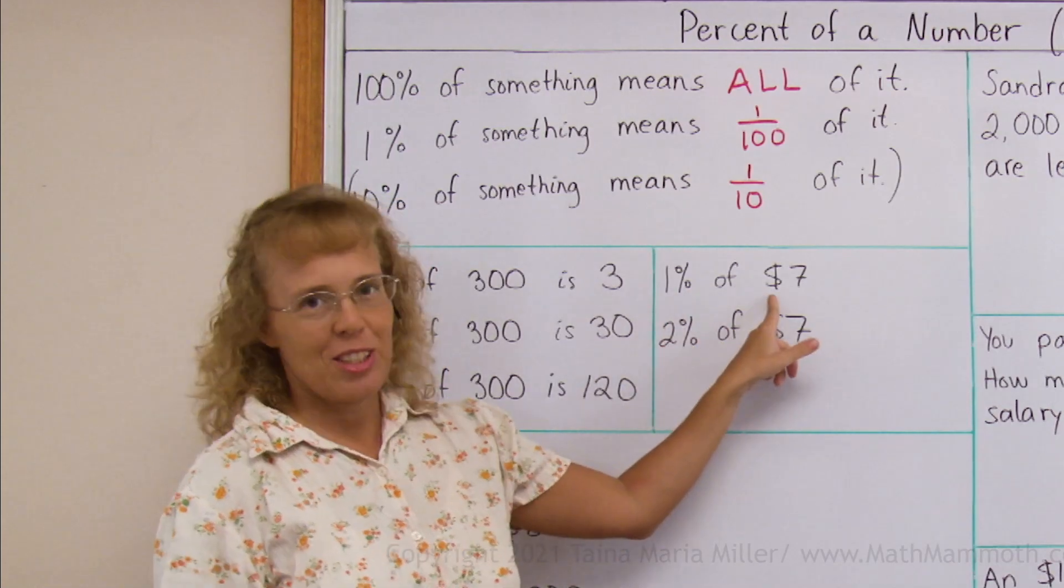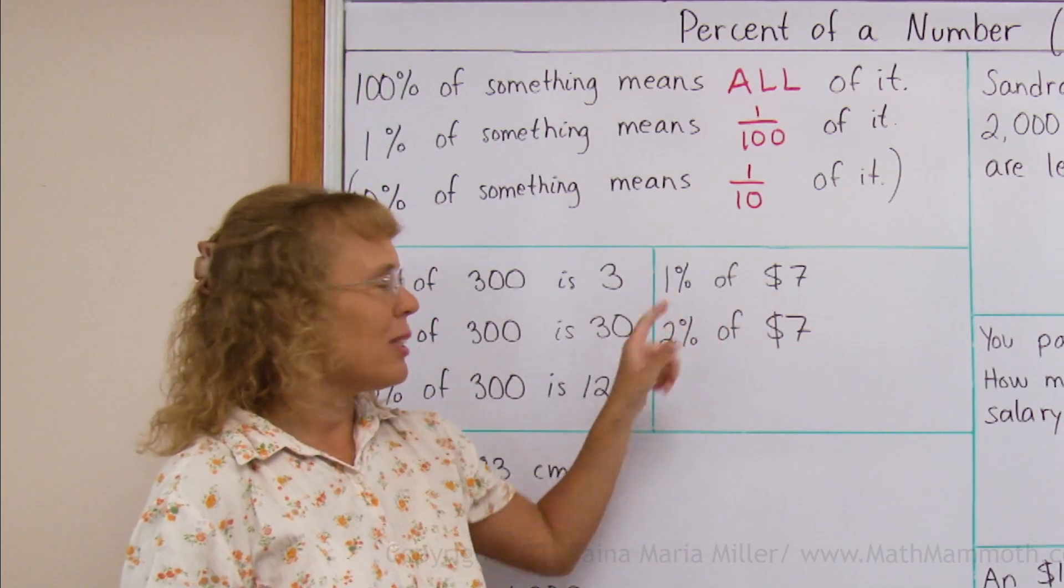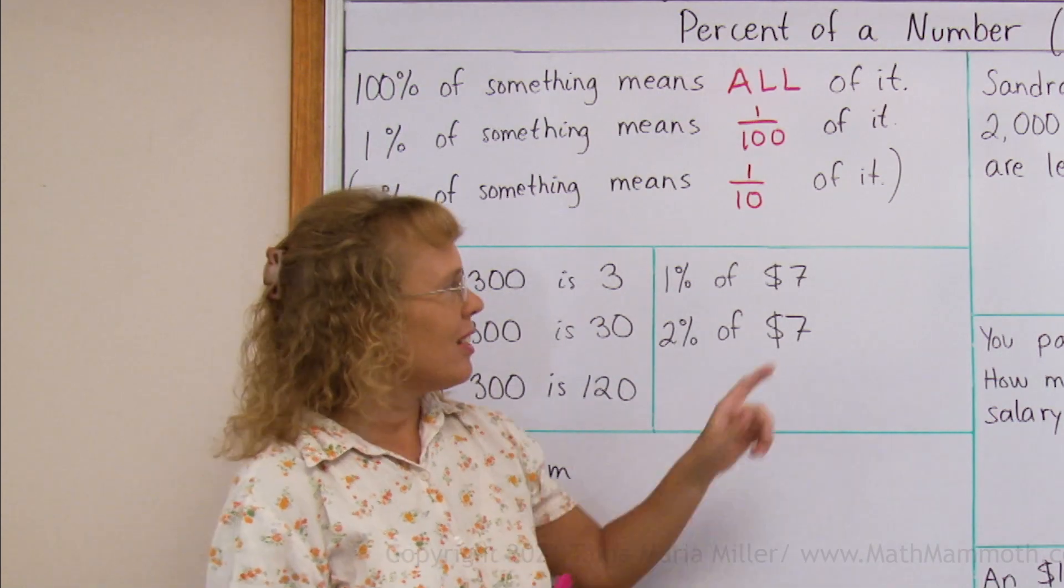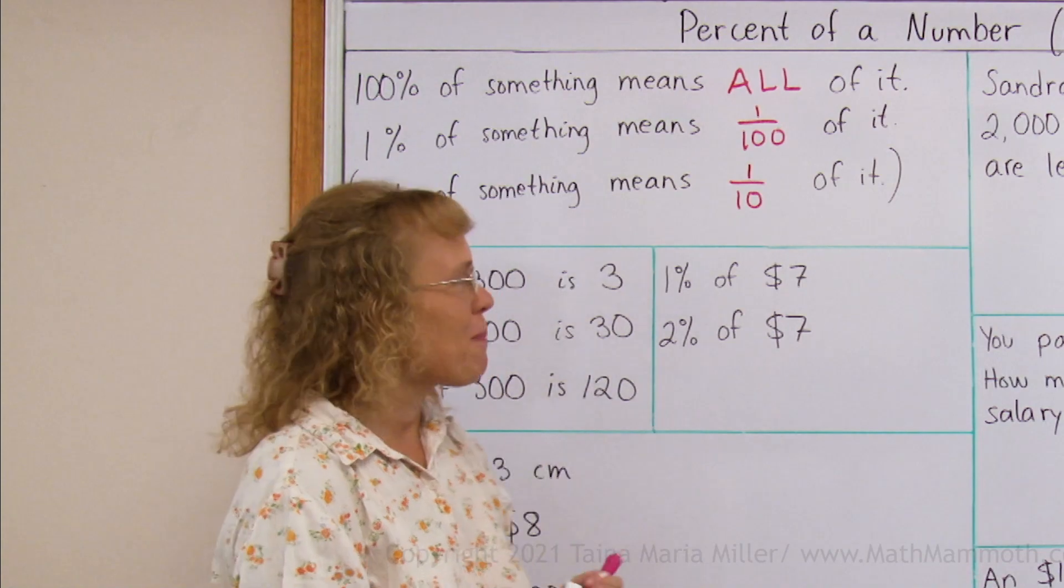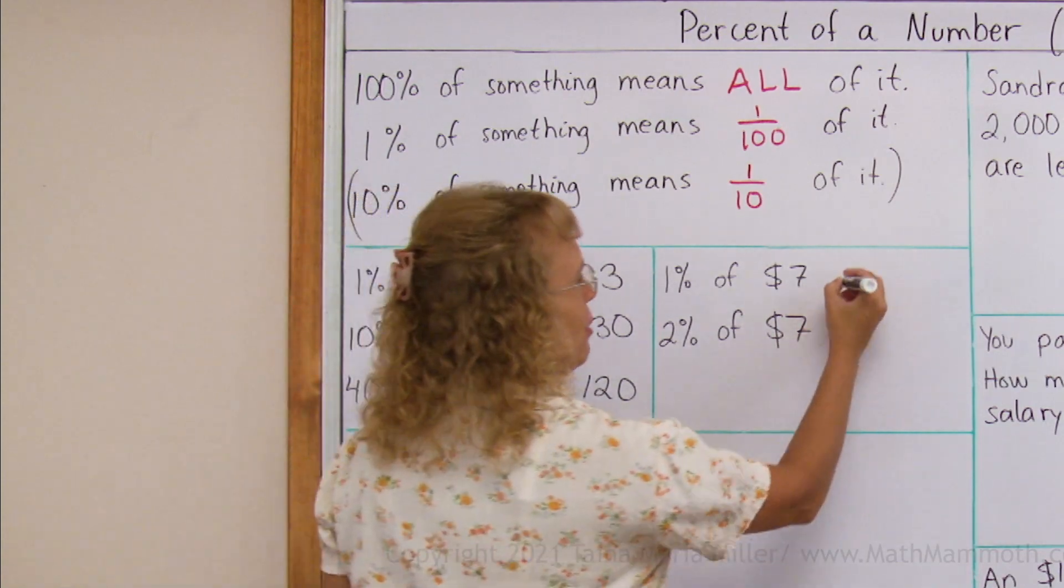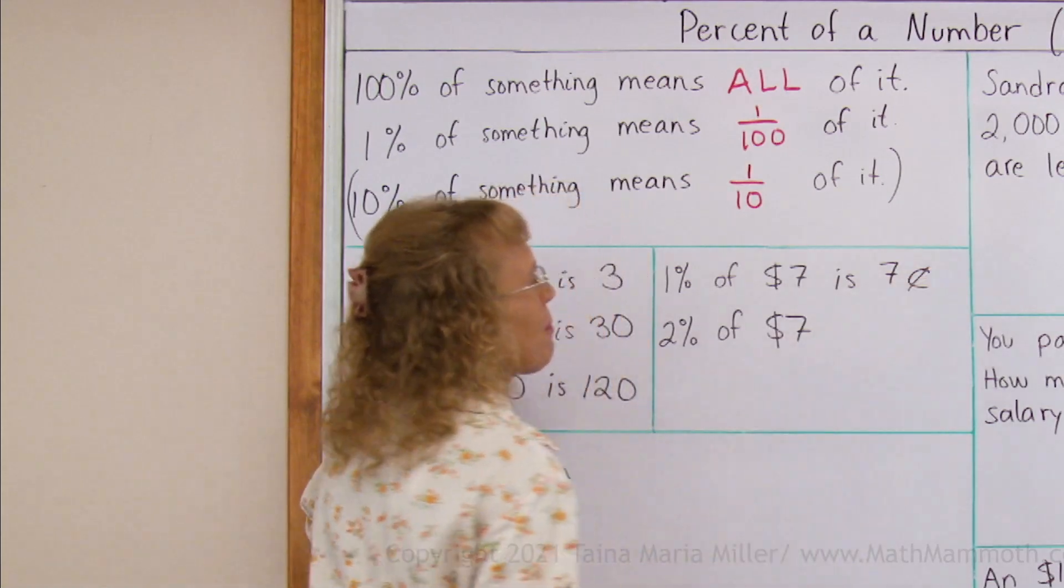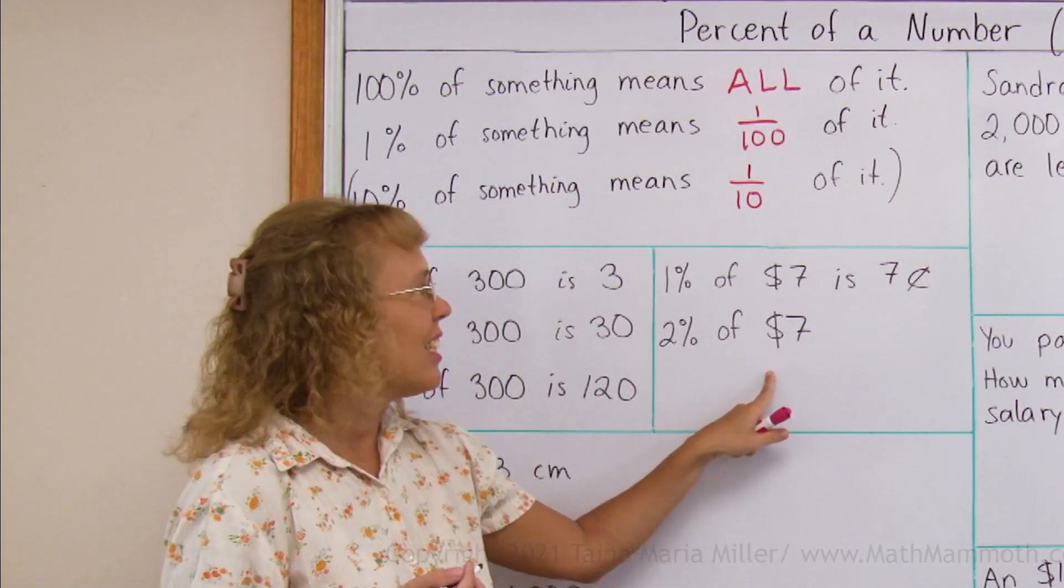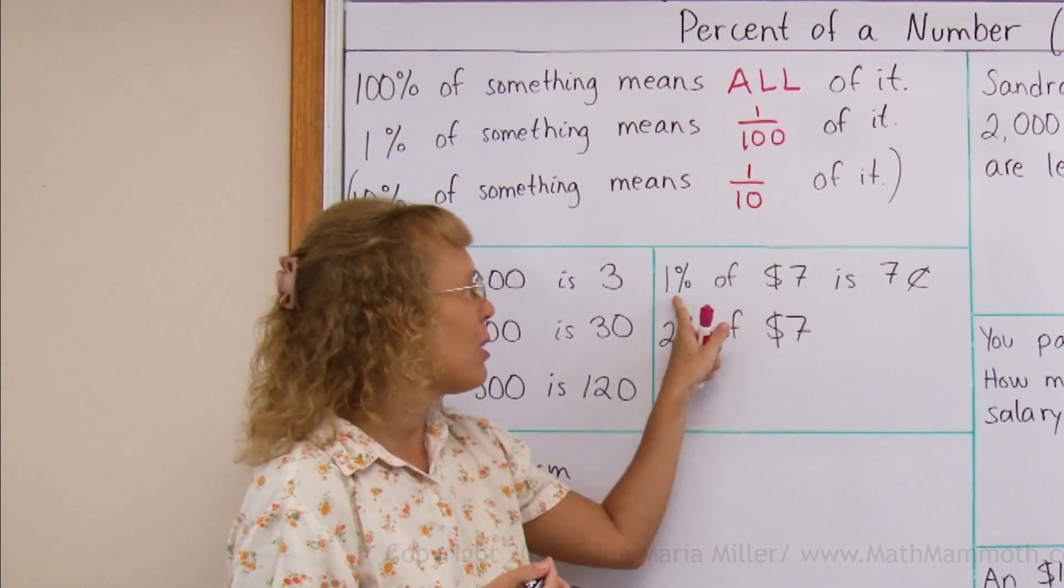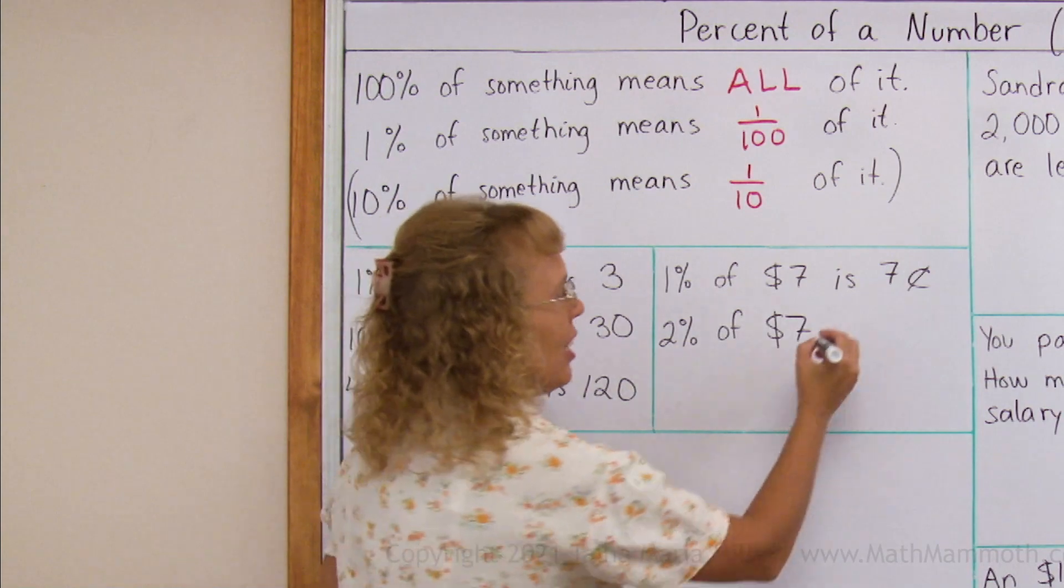One percent of seven dollars. Again, one percent means one-hundredth part. Think of this in cents. Seven hundred cents, and one-hundredth part of it would be seven cents. Two percent of seven dollars. Again, it's easy. You use your previous result. One percent of it was seven cents. Two percent of it is double as much. Fourteen cents.